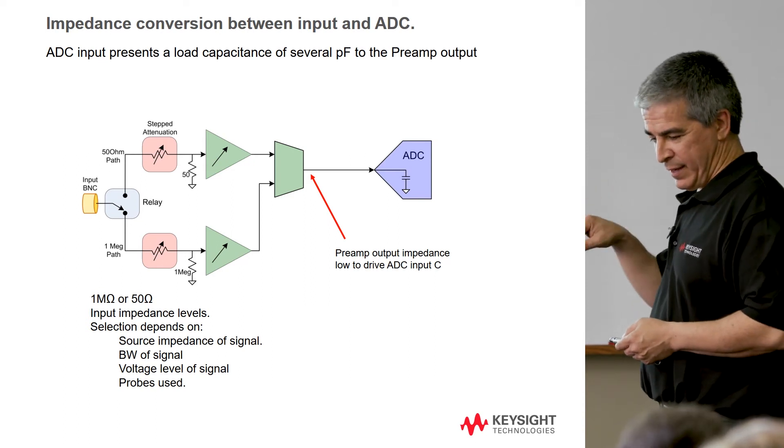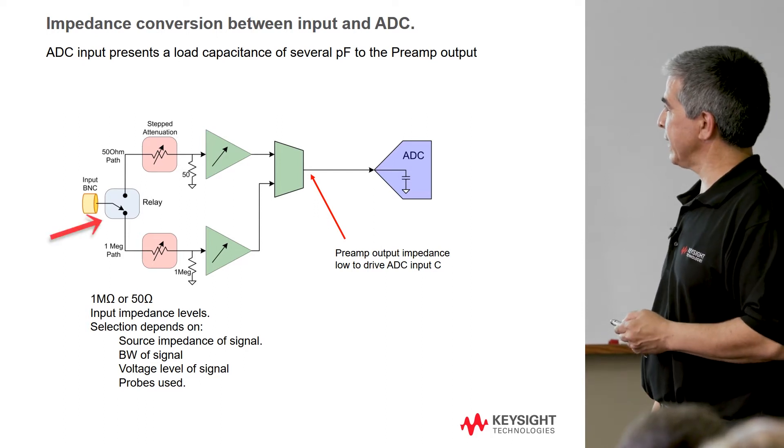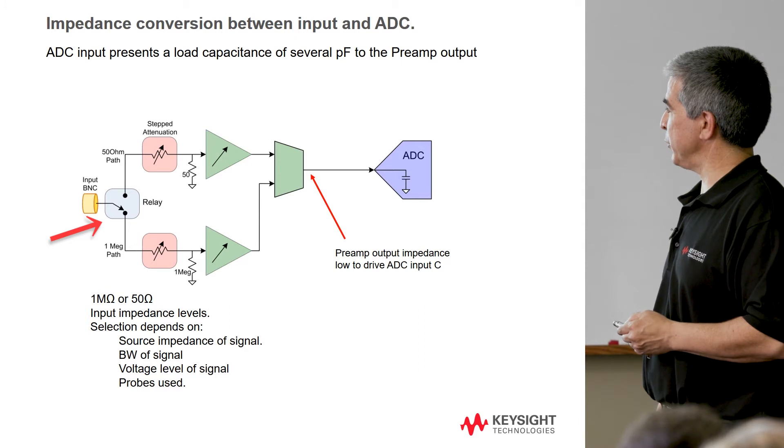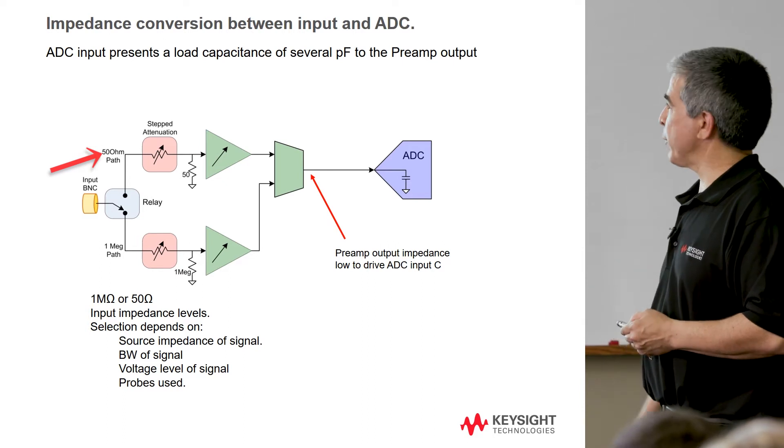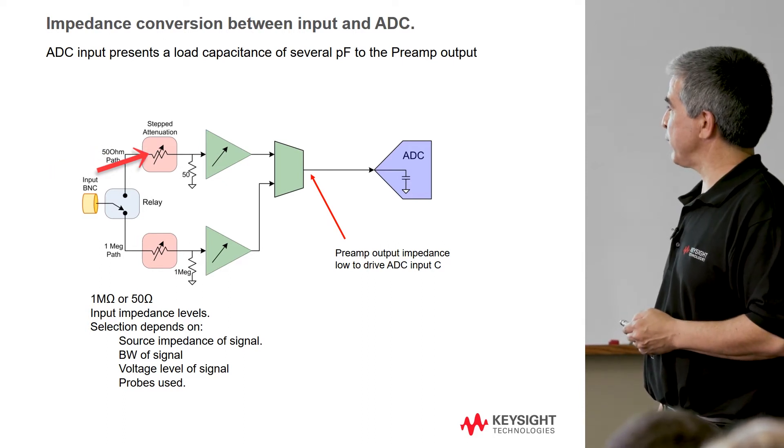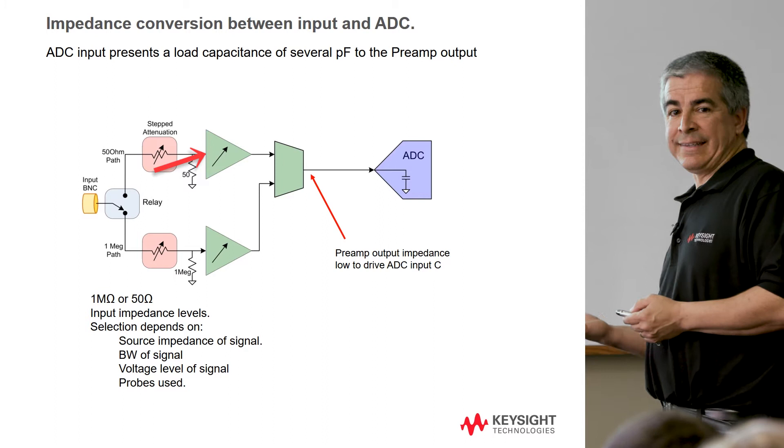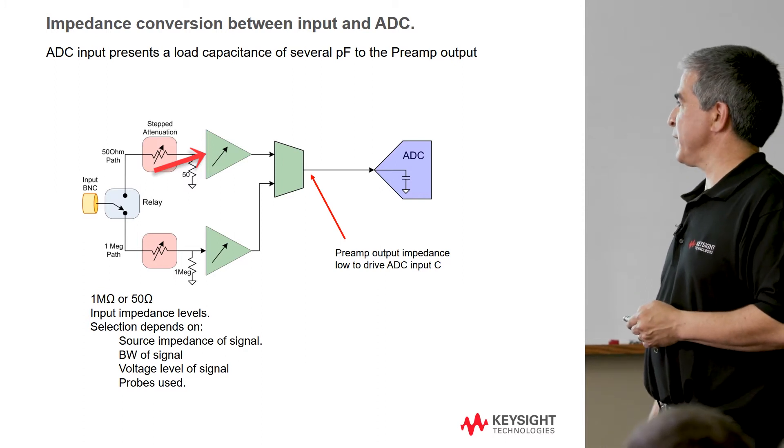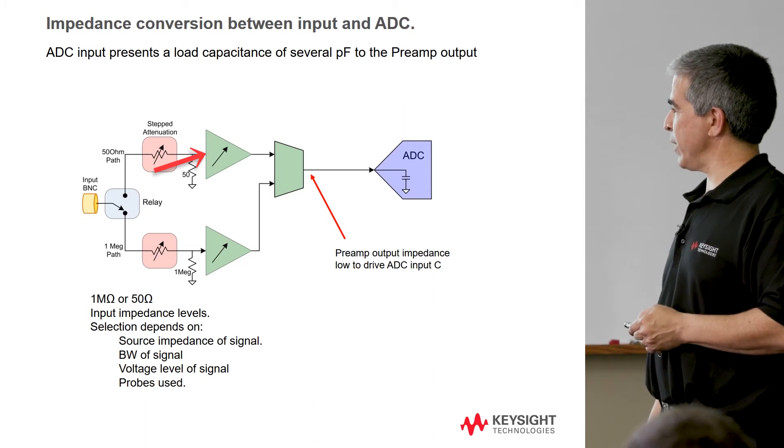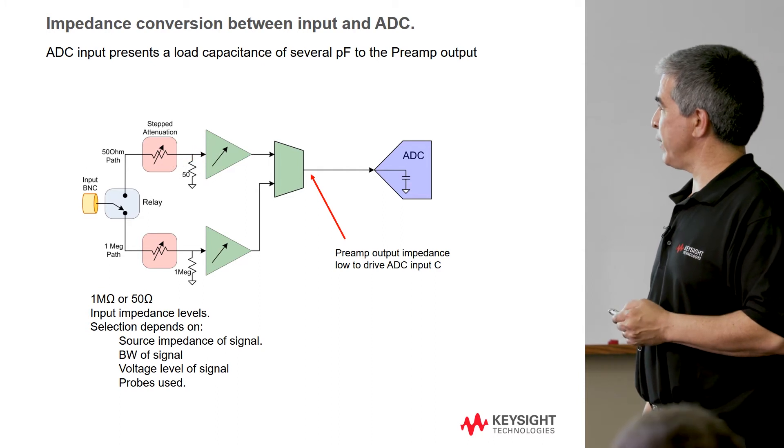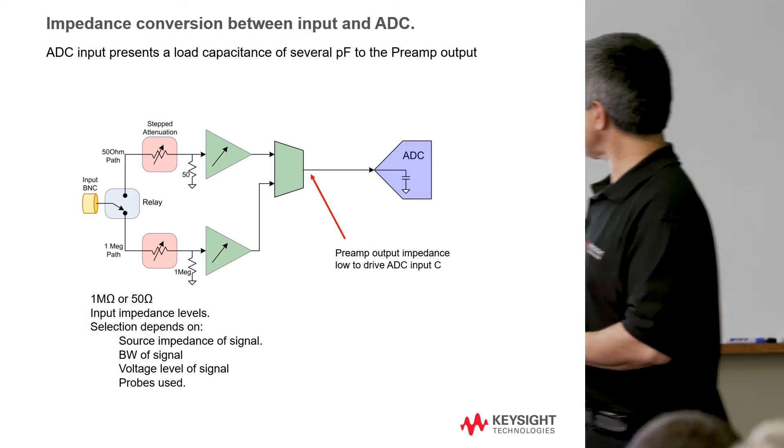Which is the megaohm path or the 50 ohm path. And then the preamp IC basically is told to energize this amplifier and this path and turn this one off. Basically, the selection there depends on the source impedance of the signal you're trying to measure, the bandwidth of the signal, the voltage levels, and basically the probes used. You've got to use special probes to drive the megaohm path that are different than the ones who drive the 50 ohm path. And I have a couple of slides on some of our probing technology too.